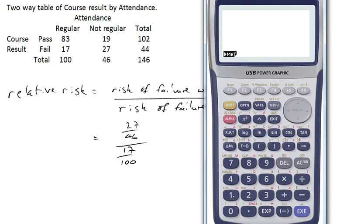When I do that calculation, 27 out of 46 divided by 17 out of 100, I get 3.5.